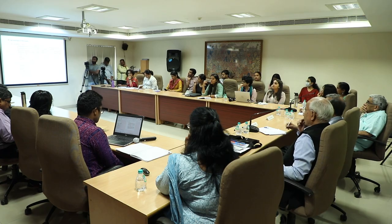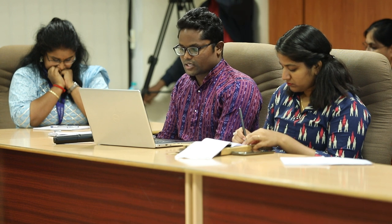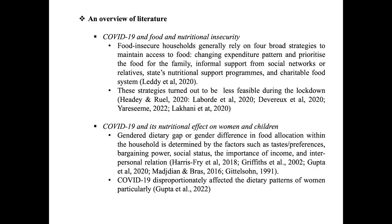We conducted a literature survey divided into three sections. The first section covers COVID-19 and food and institutional security. Many studies suggest that food-insecure households rely on four broad strategies to maintain access to food: changing their expenditure pattern by shifting from luxuries to food items, relying on family or social networks, relying on government nutritional support programs, and relying on charitable food systems.